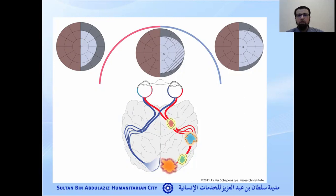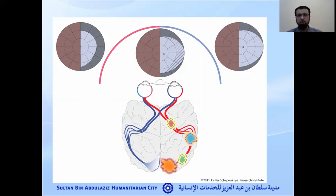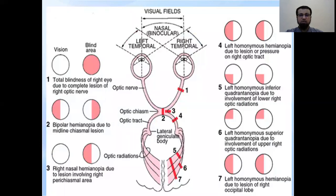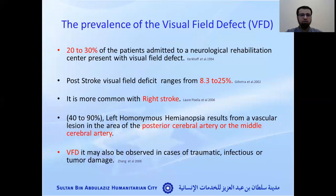This is one of the conditions that can happen to a patient when they have a brain injury to the right side of the brain — the patient will not be able to see on the left side, or vice versa. This occurs if there is any effect on the optic tract, optic radiation, occipital lobe, or part of the parietal or temporal lobe in the brain. As you see in this picture, it illustrates where the injury is and how it causes visual field defect.